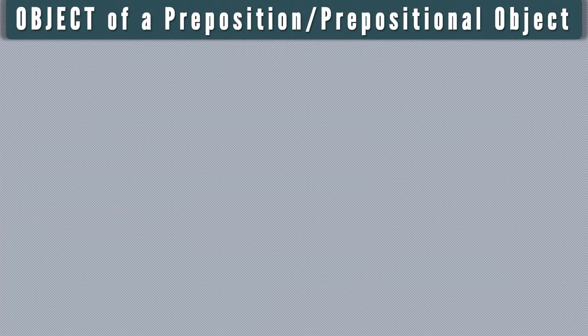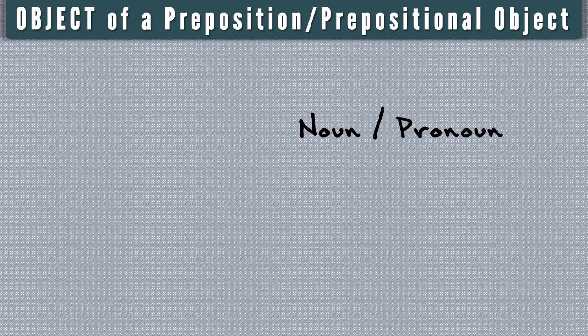Another type of object is the object of a preposition, also called a prepositional object. This is the noun, noun phrase, or pronoun that is governed by a preposition.